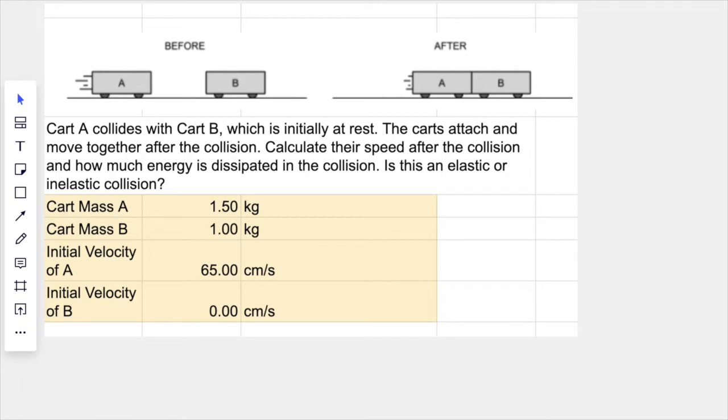For this particular question we have cart A with a mass of 1.5 kilograms, cart B slightly less massive with a mass of one kilogram, and the initial velocity of cart A is 65 centimeters per second. So this is moving in to the right. They'll stick together and move together. Sometimes you'll see this in physics demonstration carts - they have a side that has velcro so that they stick together. There's a follow-up question here about how much energy is dissipated and whether or not this is an elastic or inelastic collision.